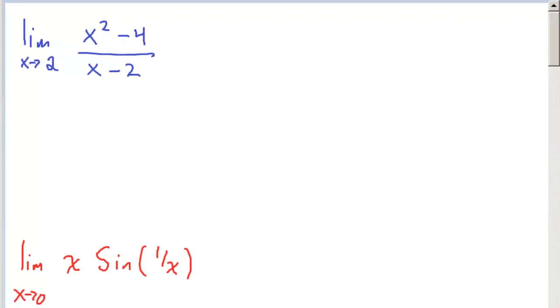So the first one we have to pull out a little factoring. This is equal to the limit as x approaches 2 of (x plus 2)(x minus 2) over x minus 2. Of course, the x minus 2's cancel.